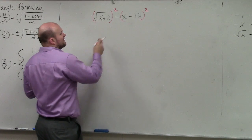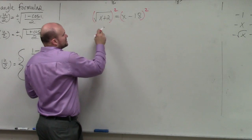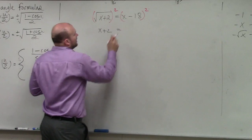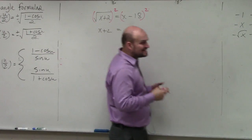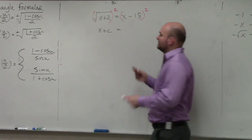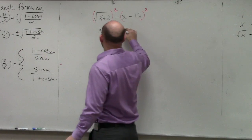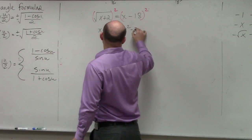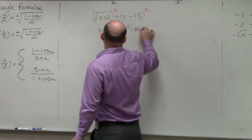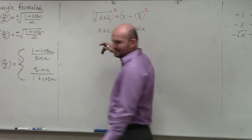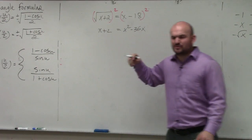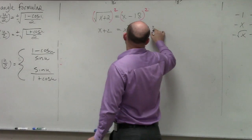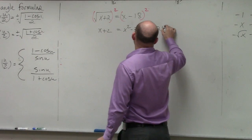So the square root of x plus 2, squared, is just going to be x plus 2. And then x minus 18 is a perfect square trinomial. So that's going to be x squared minus 36x, and 18 times 18 is 324, so positive 324.